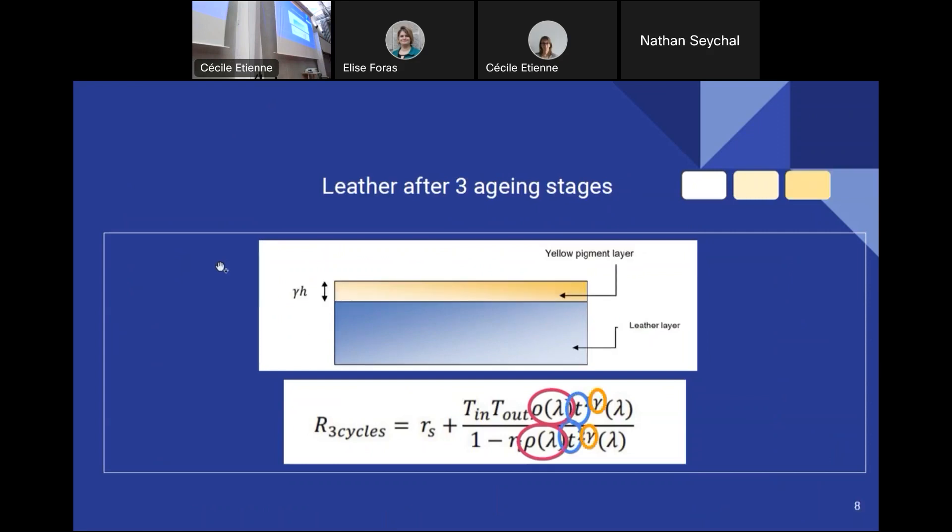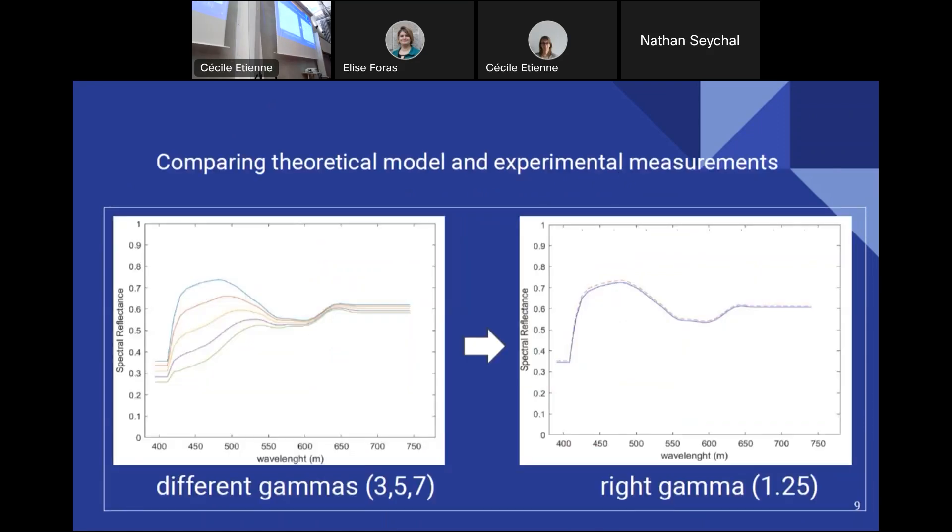And finally, the only thing left for us to find was the gamma. And for that, we used the samples where the leather got really yellow. And so what we did is we plotted our measurements, which are in blue, and we made gamma vary, as you can see here, until we got the right graph matching our measurements.